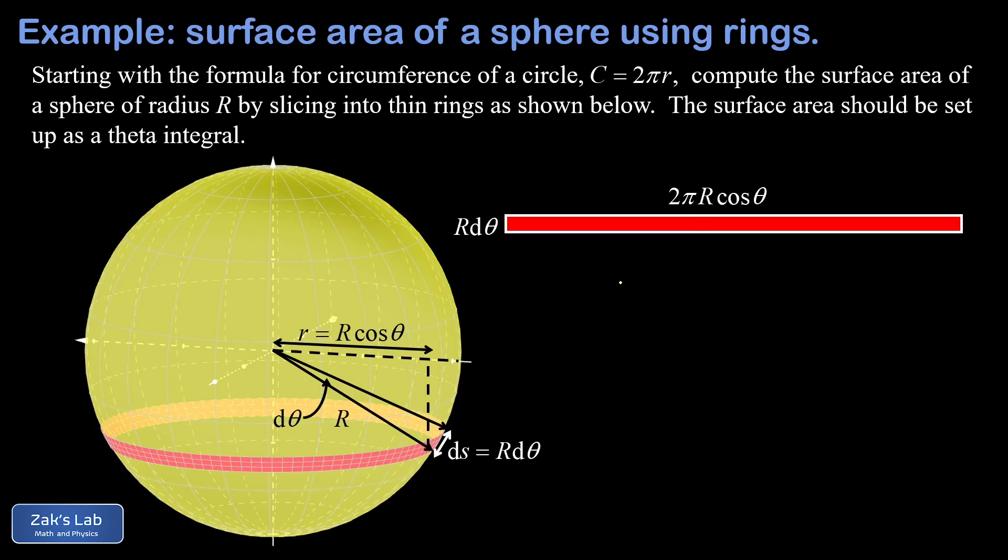Now that we know the dimensions of this rectangle that results from unrolling a single ribbon, we can write down the area contribution of this ribbon, which we'll call dA for an infinitesimal area contribution. The area of a rectangle is just length times width, so we multiply these two quantities, and that gives us two pi R squared,